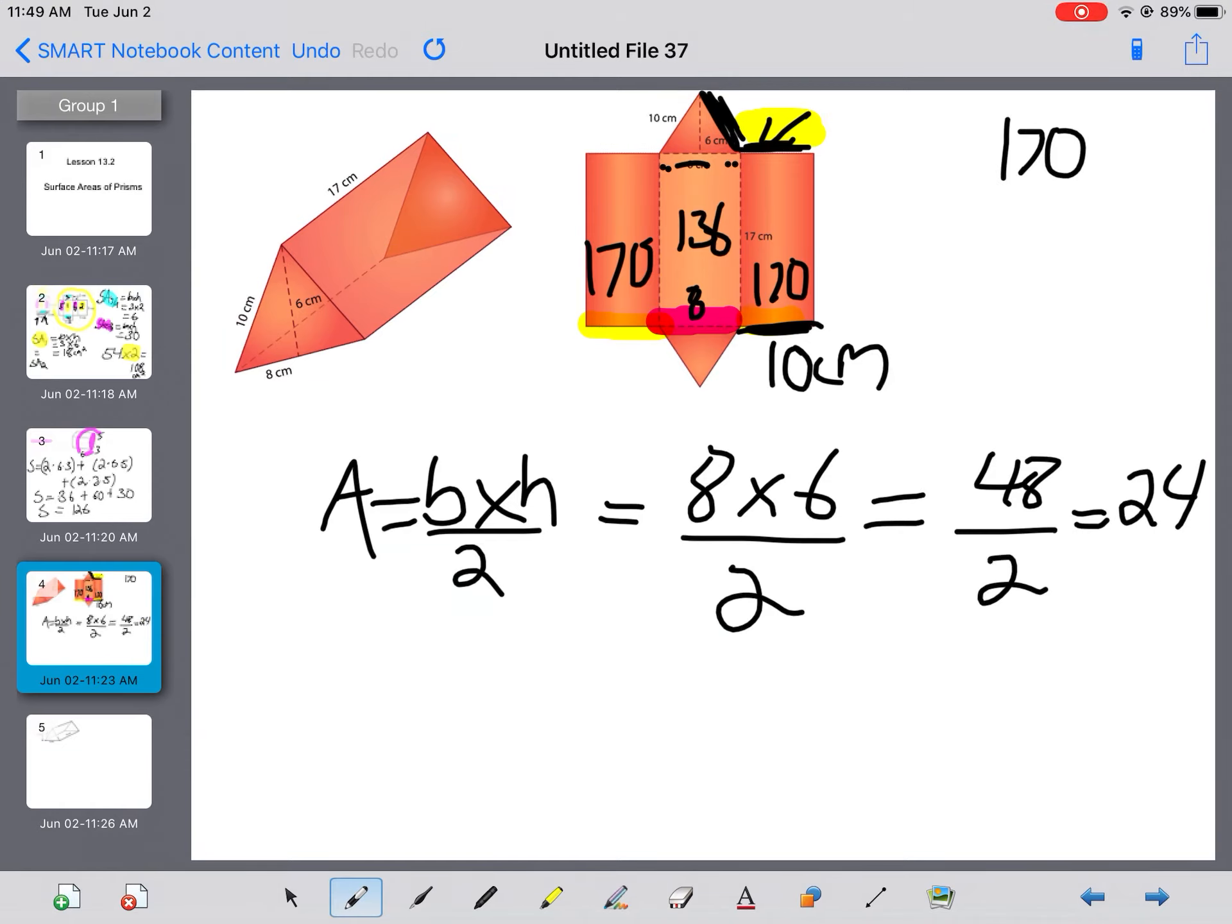To finish it off, I can add all my faces together. So I have 170 two times, then I have 136, then I have 24 two times because there are two triangle shapes on my net. I can add those all together and I will get 524. 524 centimeters squared.